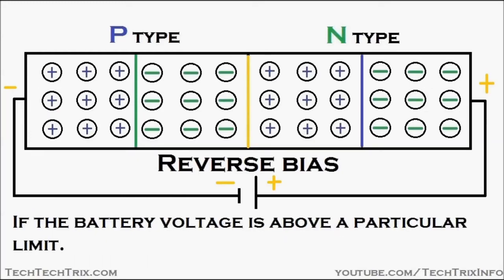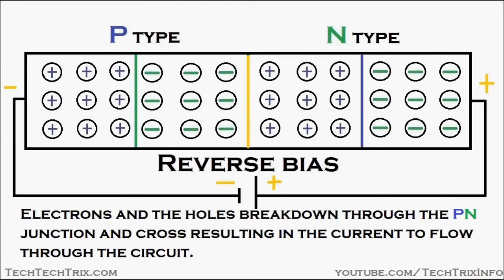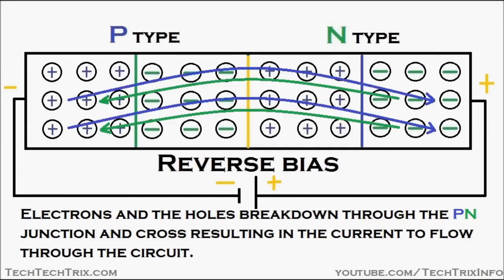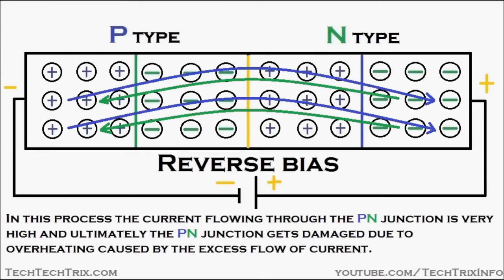But under a particular condition, if the battery voltage is above a particular limit — called the reverse bias breakdown voltage — what happens is that electrons and holes break through the PN junction, crossing the junction and resulting in current flowing through the circuit. You can see the electrons, which are negatively charged, crossing the junction and moving towards the P region, and the holes, which are positively charged, breaking through the junction towards the N region. This breakdown is called avalanche breakdown. In this process, the current flowing through the PN junction is very high and ultimately the PN junction gets damaged due to overheating caused by the excess flow of current.